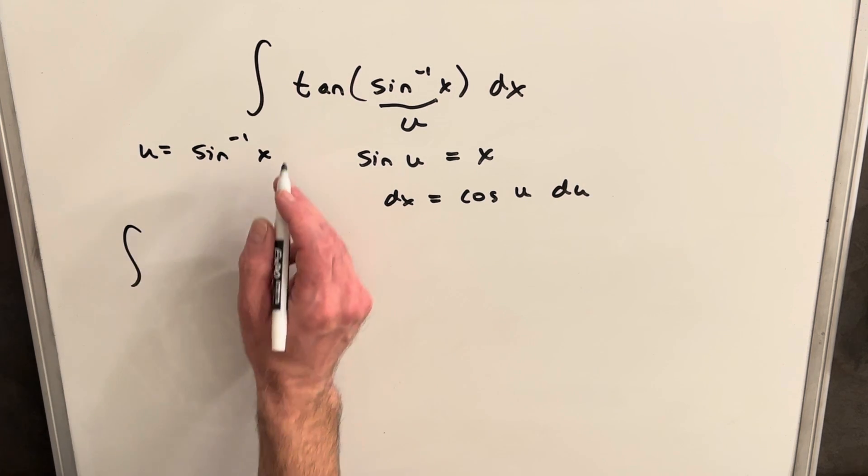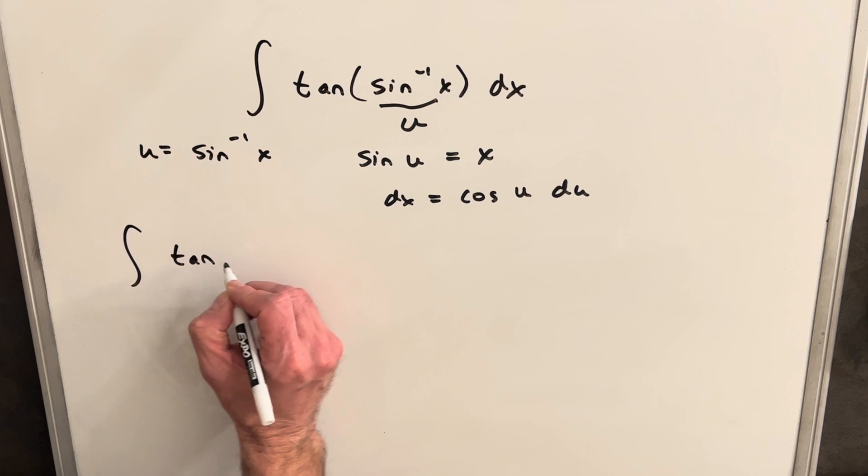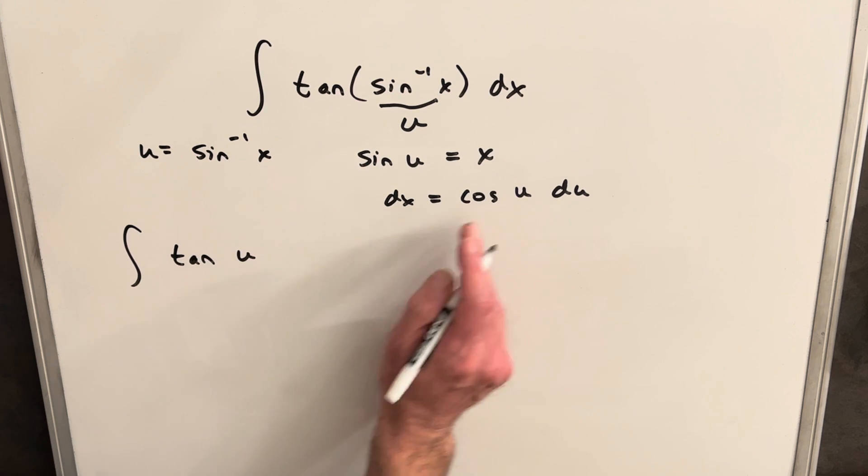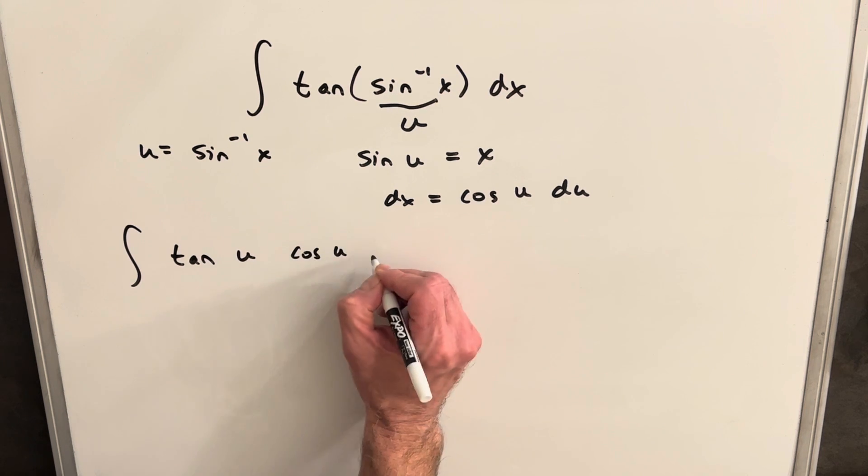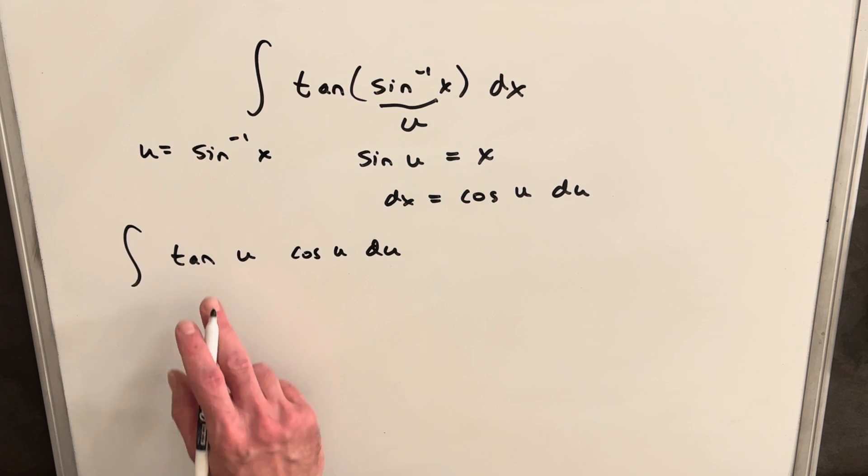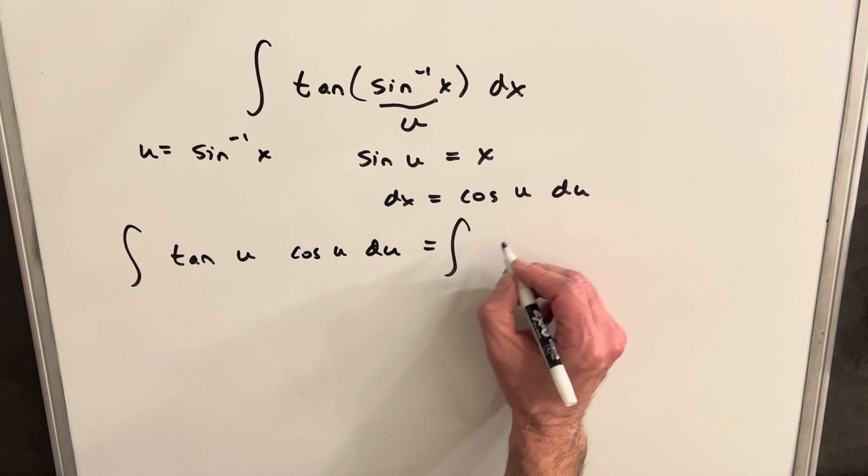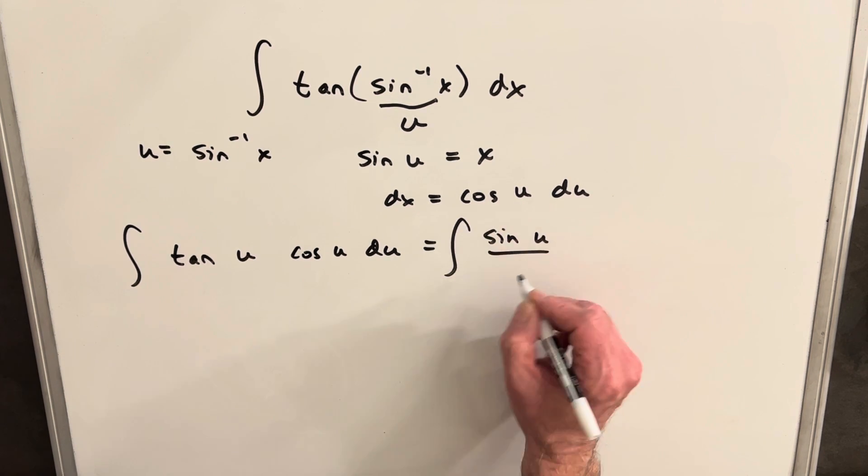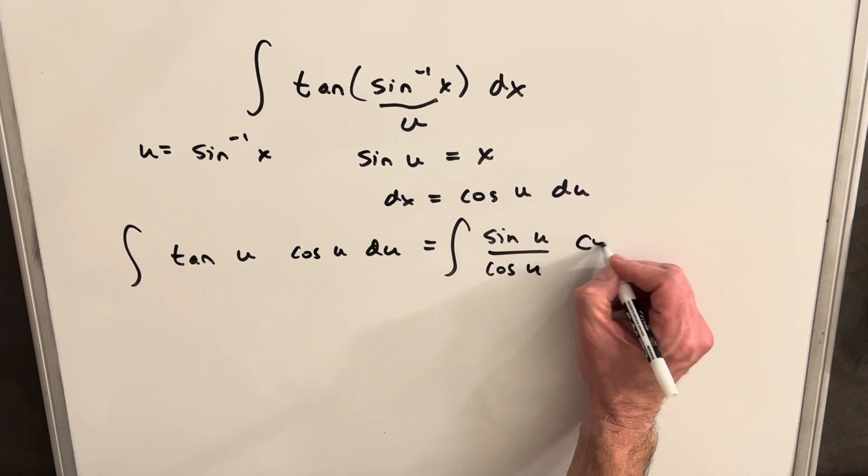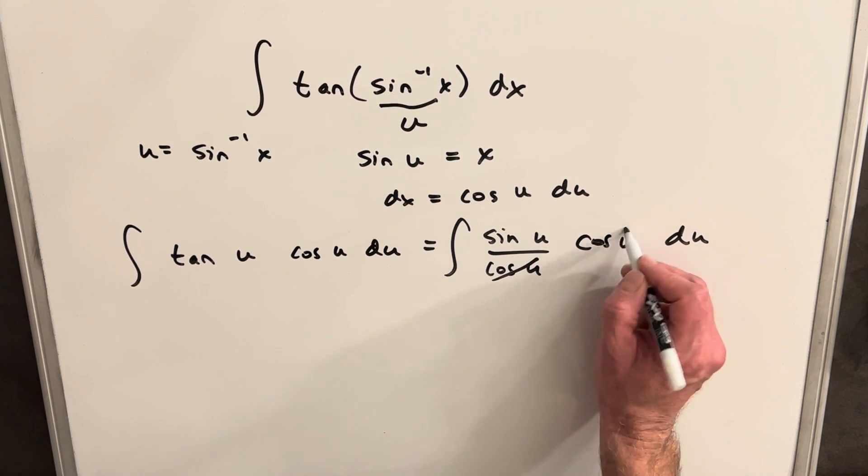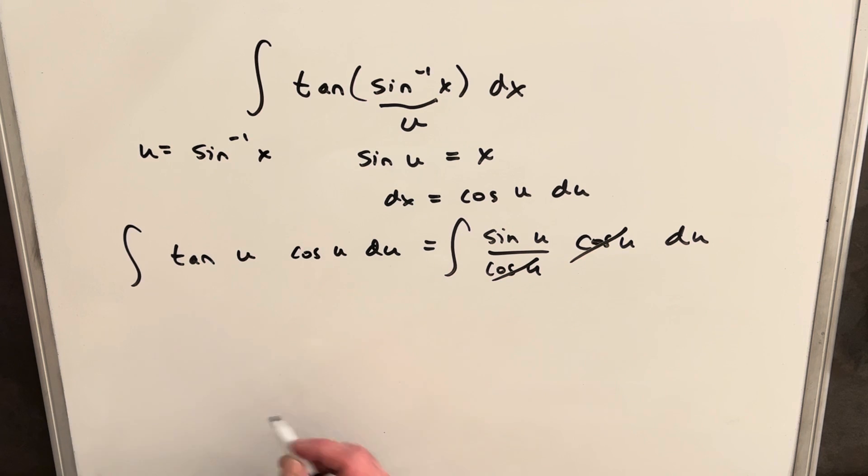So then we can make this substitution. We're going to have now tan(u) cos(u) du. But we can write our tan as just sin(u)/cos(u) like this. That's going to allow these cosines to cancel and we're actually just integrating sin(u), which is perfect because that's just going to be -cos(u) + c.